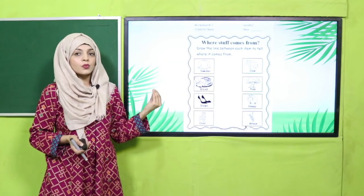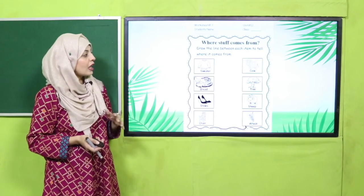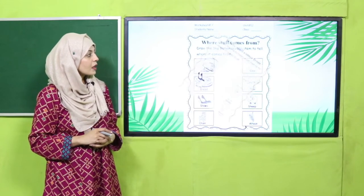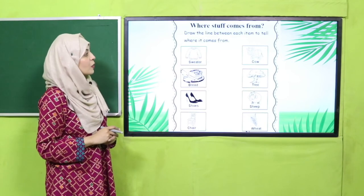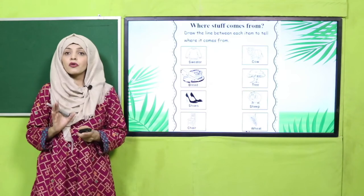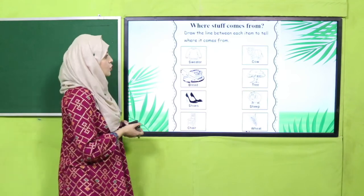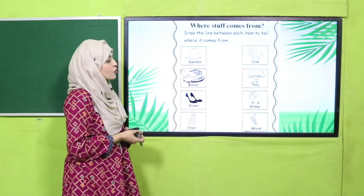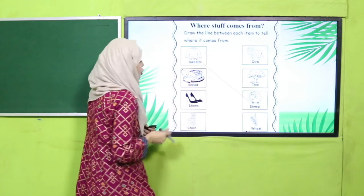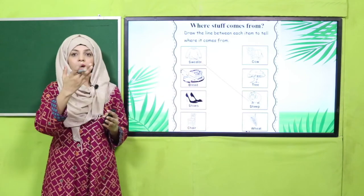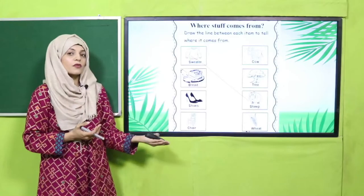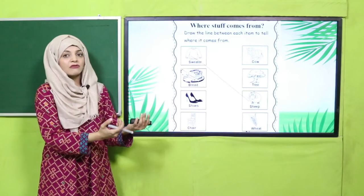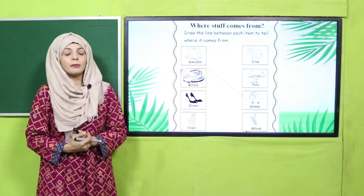Your teacher will provide you with a worksheet in print form. Write down your name and class. The worksheet is called 'Where Stuff Comes From' — draw lines between each item to tell where it comes from. I'll do the first one: a sweater — the wool comes from the sheep. That's how you join the two columns: one side man-made, the other natural. Pause the video and complete your worksheet.